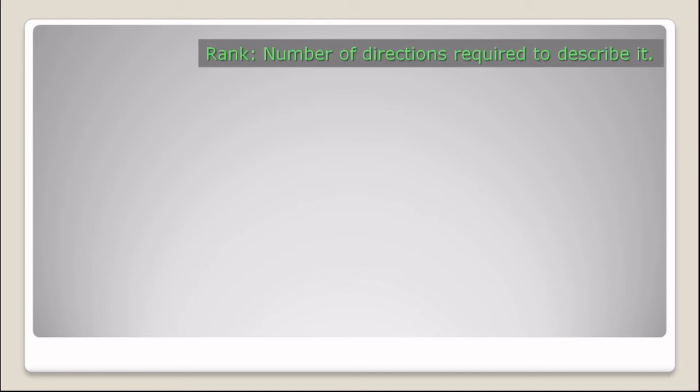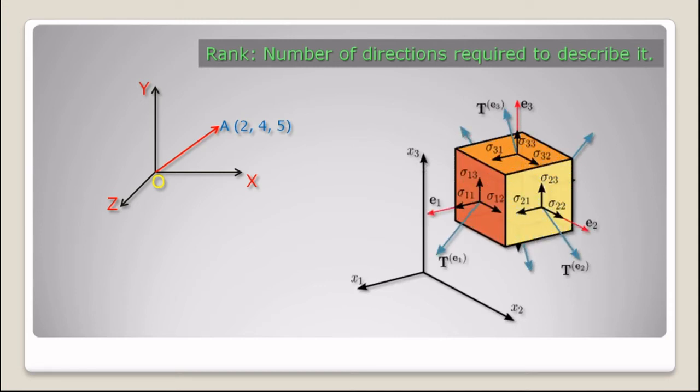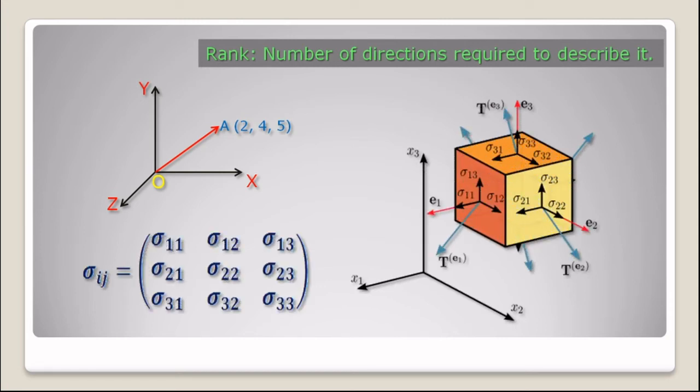Rank is the number of directions required to describe a quantity — in other words, it is the amount of information needed to find a specific component. For a vector, the rank is 1 as the number of basis vectors per component is 1. For stress, the number of basis vectors per component is 2, so the rank is 2. A tensor of rank 0 is a scalar, as the number of basis vectors in a scalar is 0.